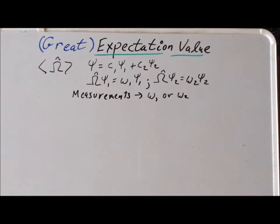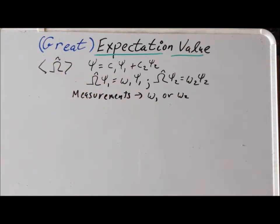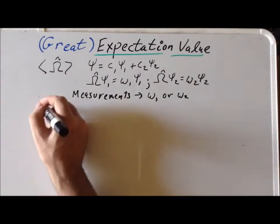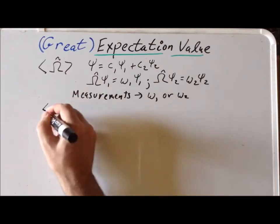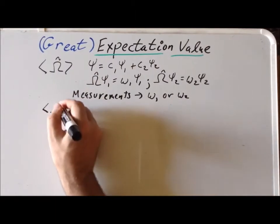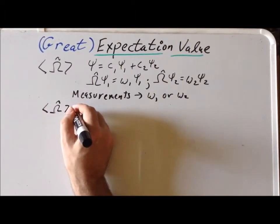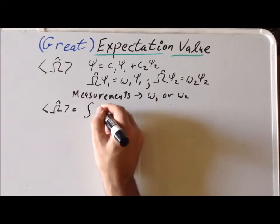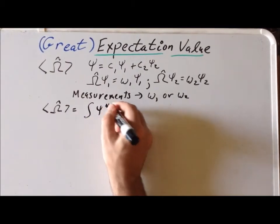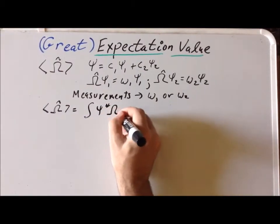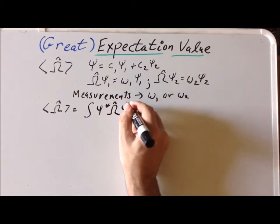Now, if we take a large number of measurements, we would get a particular average, which would be the expectation value of our operator. So let's see if we can derive an expression for this. By definition, for the particular case we have here, the expectation value is the following integral: the integral of psi star times the operator times psi d tau.